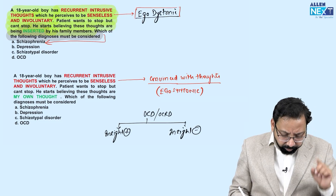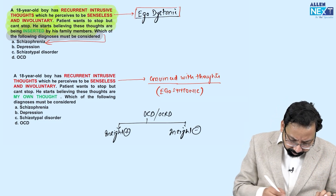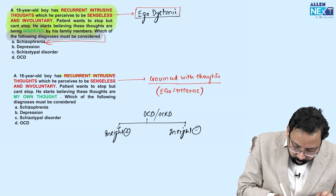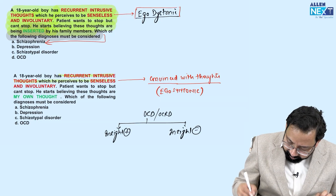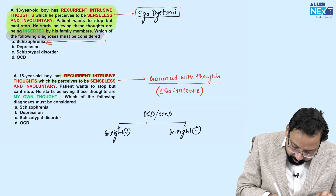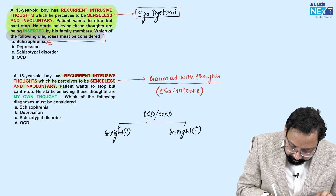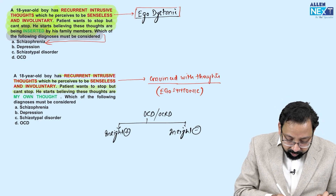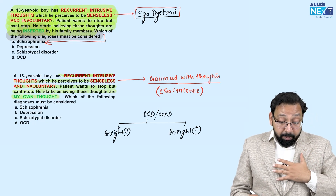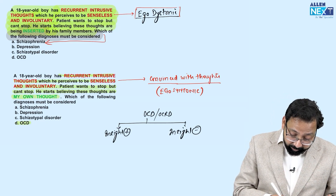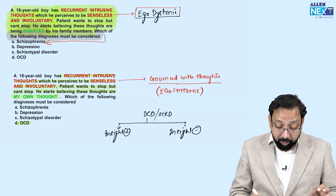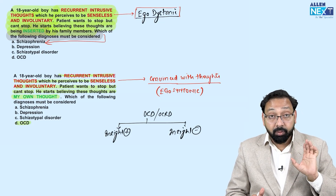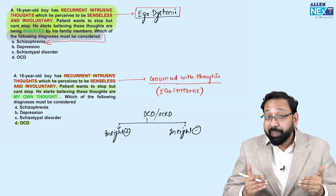A second question with only one word different: an 18-year-old boy with recurrent intrusive thoughts perceived as senseless, involuntary, wants to stop but can't — but he starts believing these thoughts are his own thoughts. This is obsession, and the diagnosis is OCD.